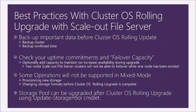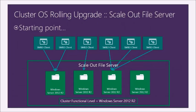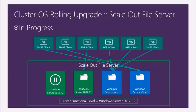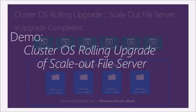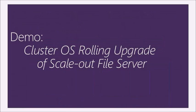For scale-out file services, you can bring cluster nodes online with Server vNext, connect to storage, format, install Server vNext, and upgrade seamlessly. Resources can be moved from Server 2012 R2 nodes to Server vNext nodes without any downtime, and clients can continue accessing resources throughout. Once all instances are updated, run the Update-ClusterFunctionalLevel command to finalize the upgrade.